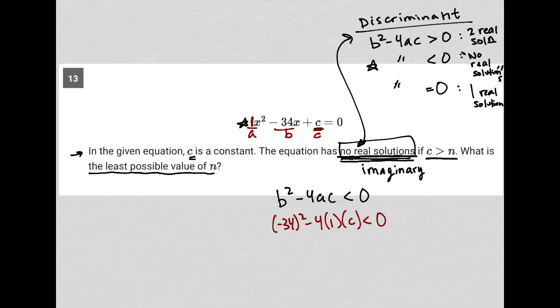In my calculator, 34 squared is 1156. This becomes minus 4c is less than 0. Subtract 1156 from both sides. And I'm left with negative 4c is less than negative 1156.